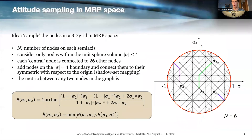This paper is based on an MRP attitude sampling. According to MRP properties, if we're performing some sort of attitude sampling, it is enough to take these samples within a unit sphere in MRP space, because such a unit sphere already contains all the points representing all the possible attitudes of a spacecraft. In this application, I am sampling that unit sphere with a three-dimensional grid of equally spaced nodes, and these nodes and their connections to neighboring nodes create a graph that can be used to search for a valid path from an initial attitude to a target attitude.